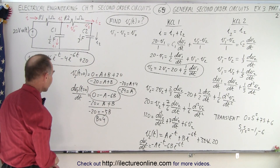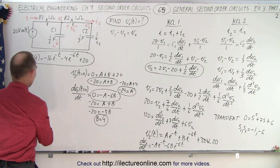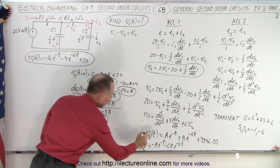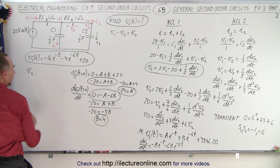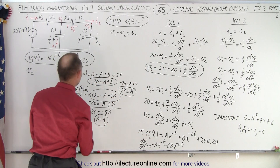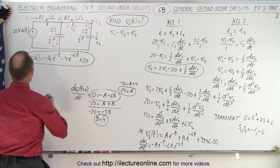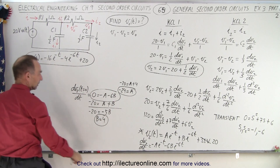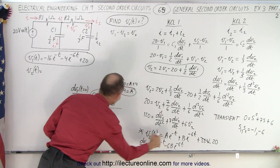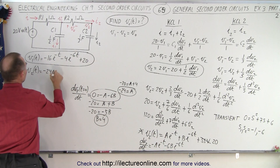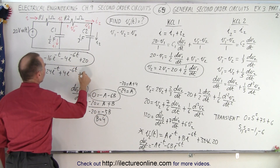We plug those values into the general V2 equation, and now we can say that V2 as a function of time is equal to minus 24 times e to the minus t, plus 4 times e to the minus 6t, plus 20.